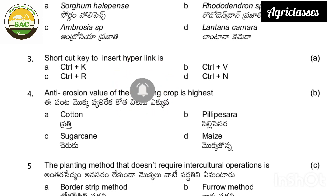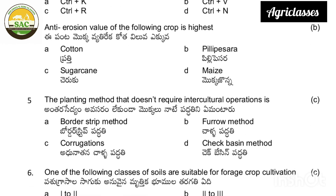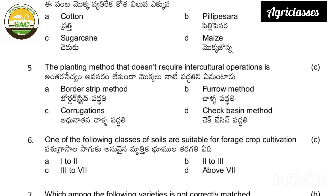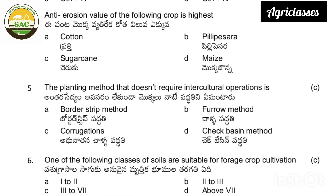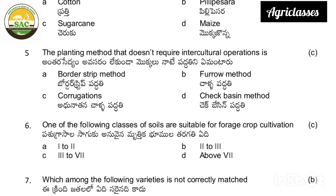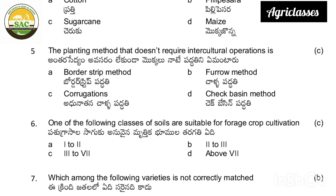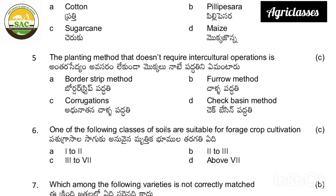Ctrl+R, or Ctrl+N. The correct answer is Ctrl+K. Next: the anti-erogen value of the following crop is highest — cotton, pillipesara, sugarcane, maize. The correct answer is pillipesara.